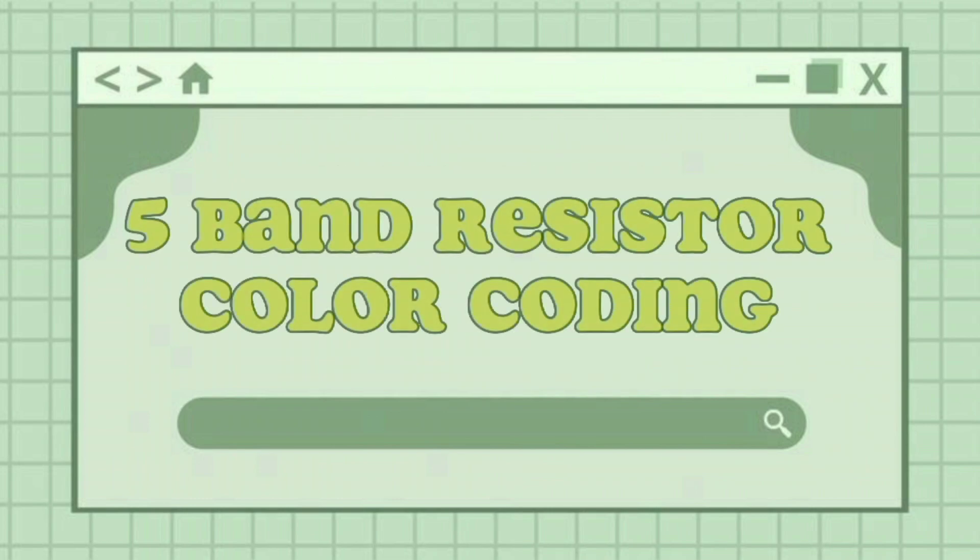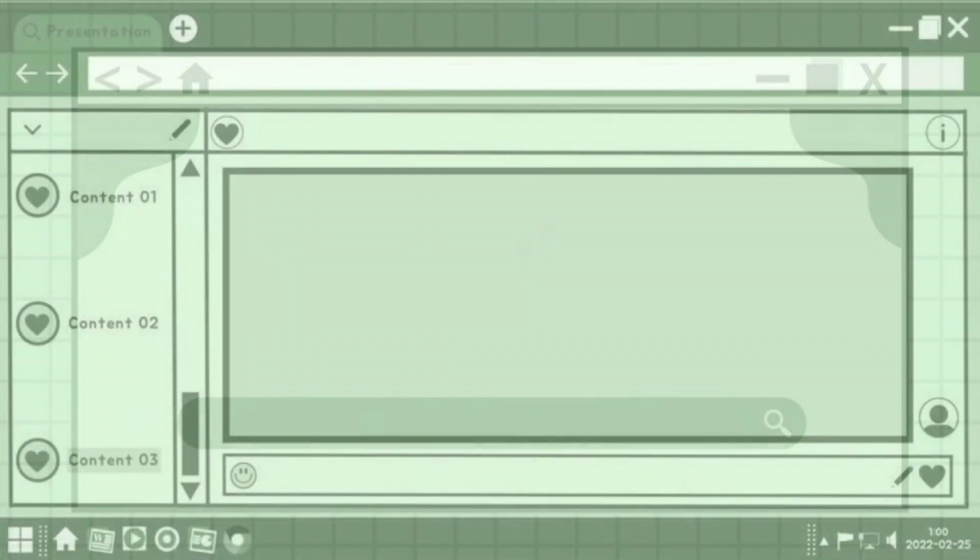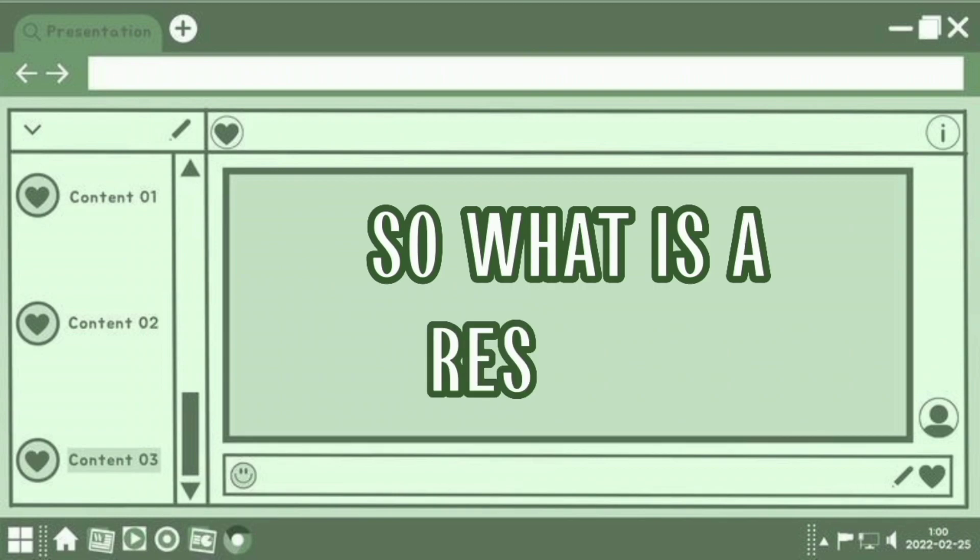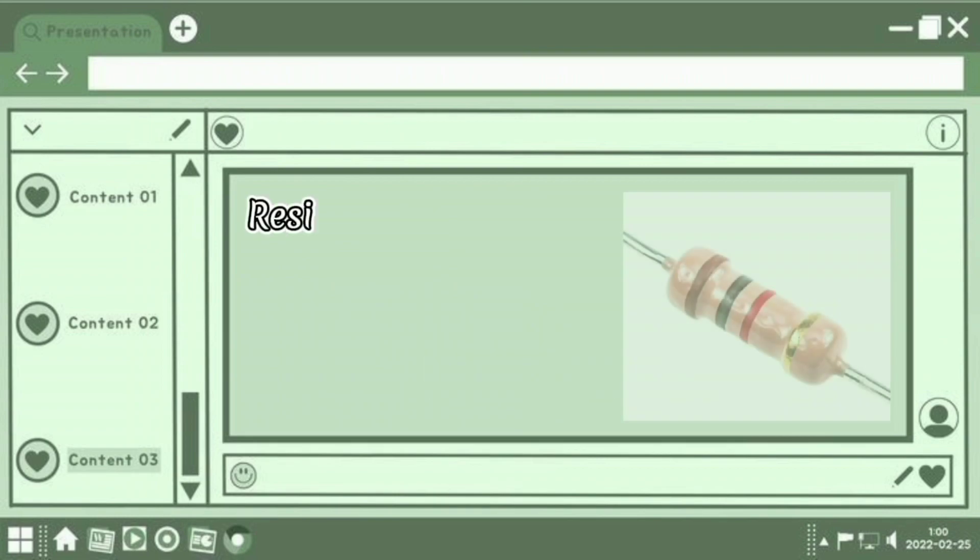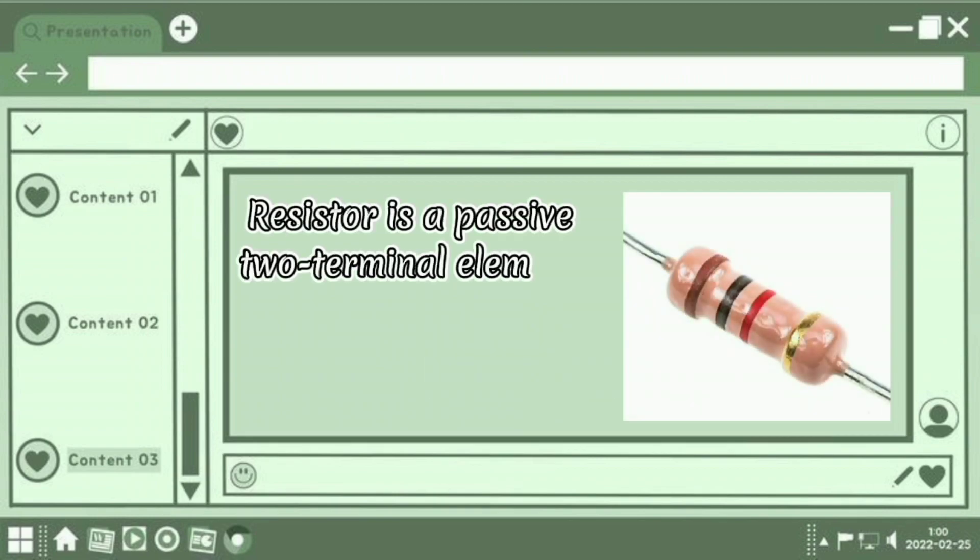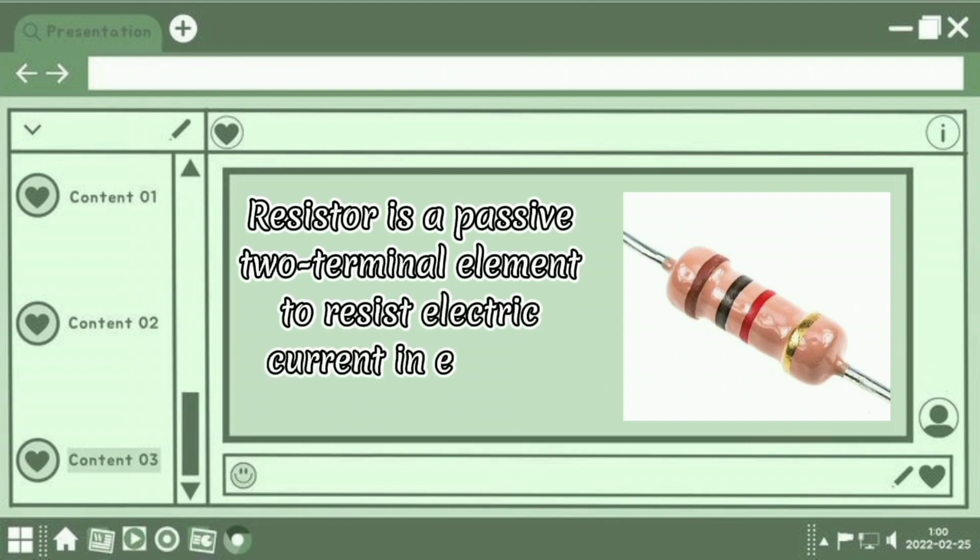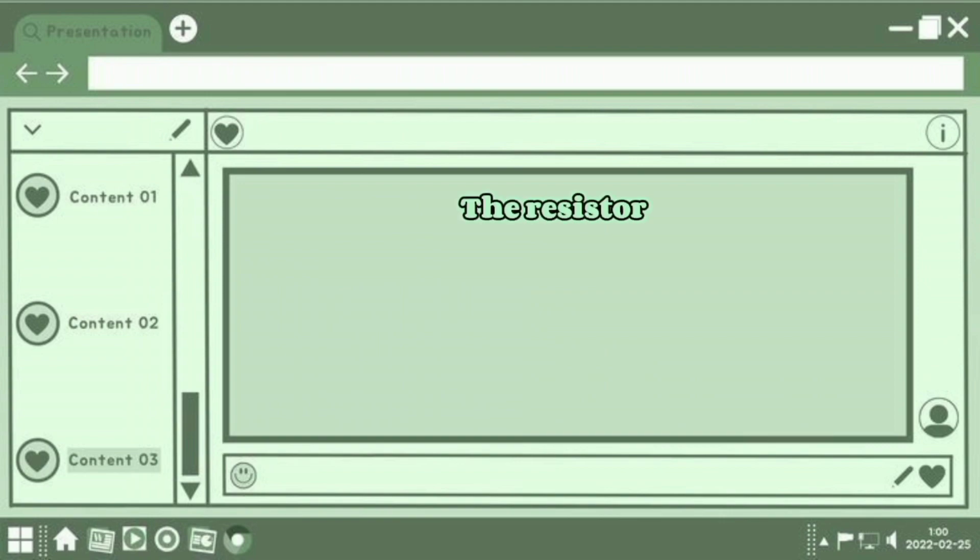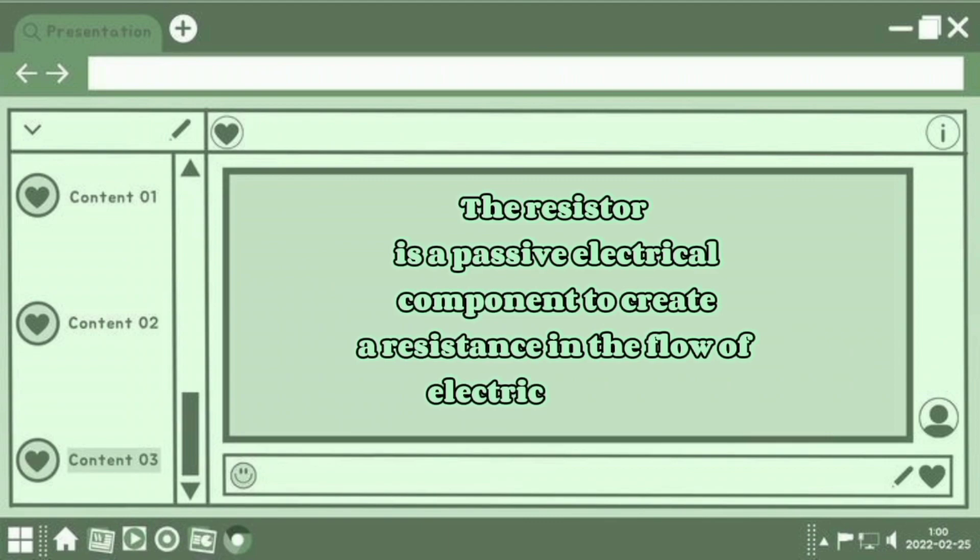5-Band Resistor Color-Coding. So what is a resistor? A resistor is a passive two-terminal electrical element that resists electric current in electric circuits. The resistor is a passive electrical component that creates resistance in the flow of electric current.